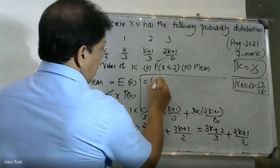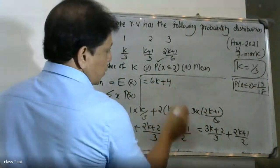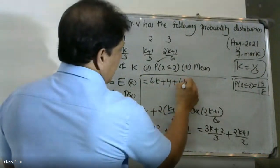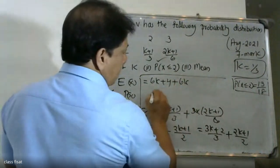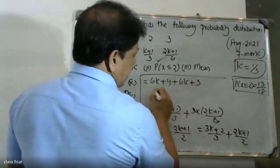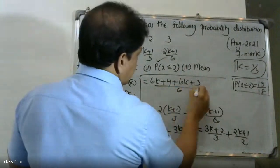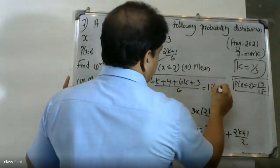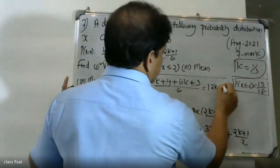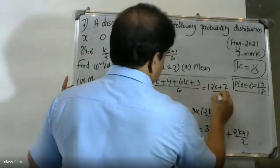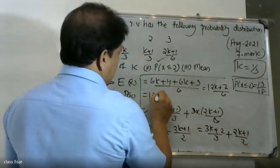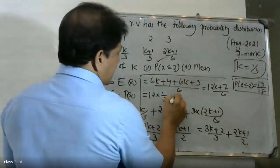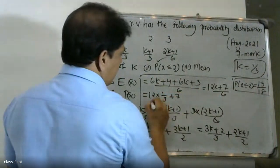Adding: 2k+2 by 3 plus 2k+1 by 2, then 3k plus 2 by 3 plus 3 by 2. Substituting k equal to 1/3 gives 1/3 plus 7/6.